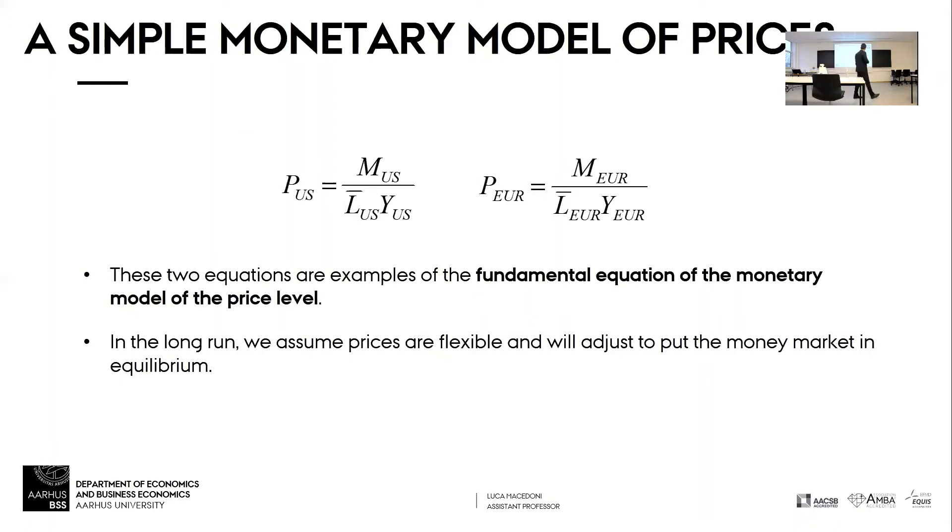The same thing is true for European price level. European price level is the ratio between the total number of euros that are in circulation divided by the number of goods that Europe produces. Simple as that.